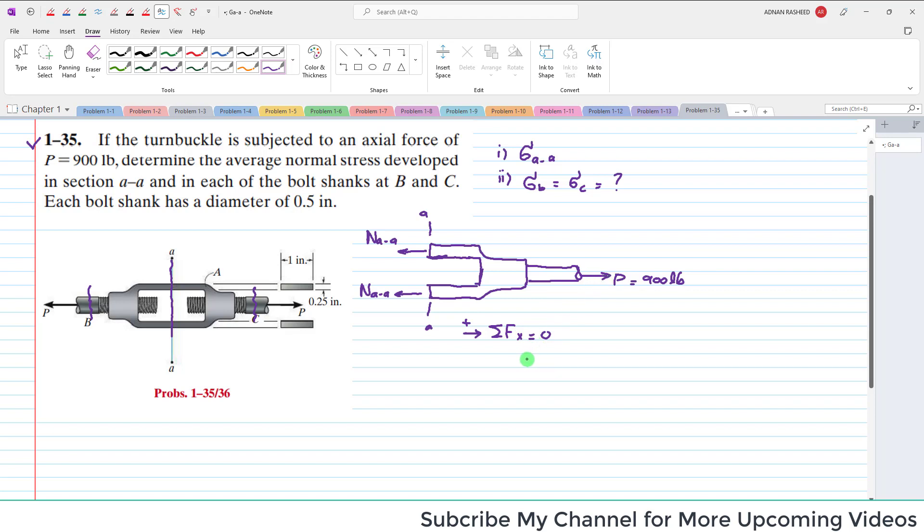You can see P is in the positive direction, so it will be 900. And these two are in the negative direction, so minus 2 times N_AA. Their sum must be equal to zero.